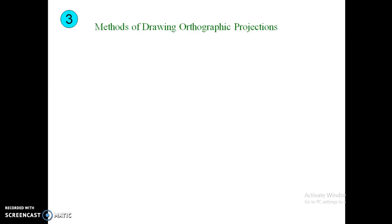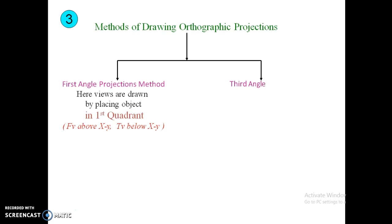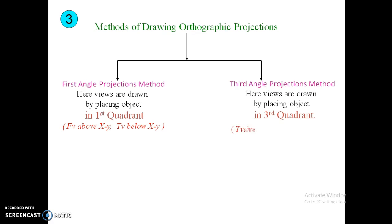The third thing is the method of drawing orthographic projections. There are mainly two methods or systems: first angle projection and third angle projection. In India, we follow ISO standards, and because of that we use the first angle projection method. In the USA and other countries, they use the third angle projection method.